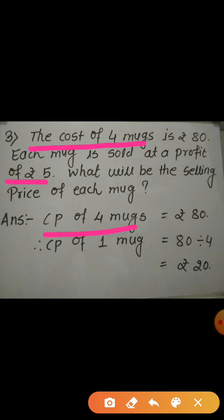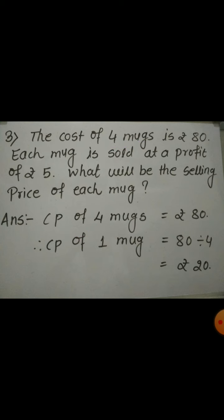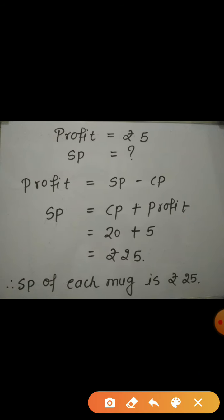The cost price of 4 mugs is Rs. 80. Therefore, the cost price of 1 mug will be Rs. 80 divided by 4, that is Rs. 20. So Rs. 20 is the cost price of 1 mug. And the profit is also given to us, which is Rs. 5.